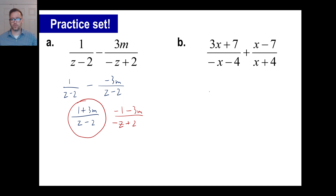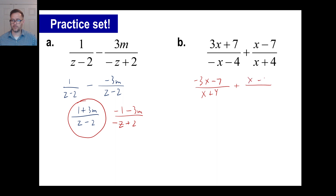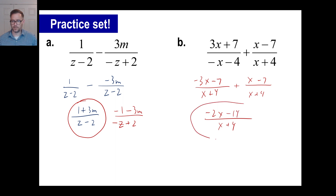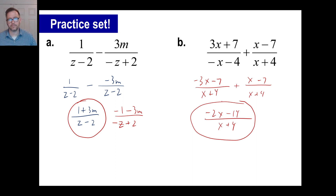For practice problem B, I'm changing the first fraction to clear out the negatives. This gives us x plus 4 in the denominator, and the numerator becomes negative 3x minus 7. Adding to x minus 7 over x plus 4, we combine: negative 3x plus x is negative 2x, and negative 7 minus 7 is negative 14, all over x plus 4.